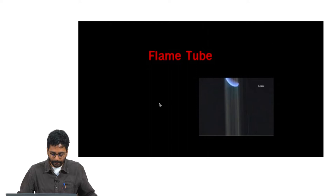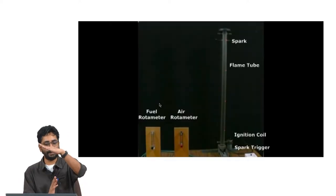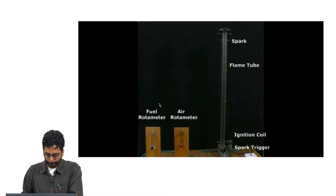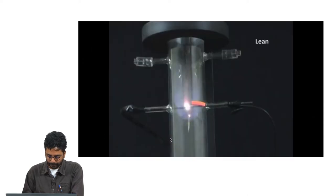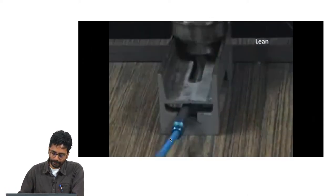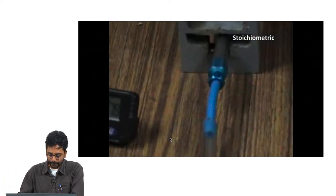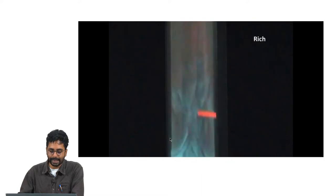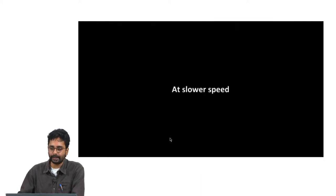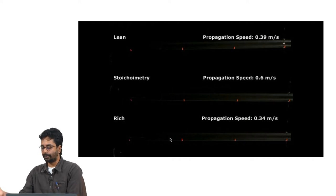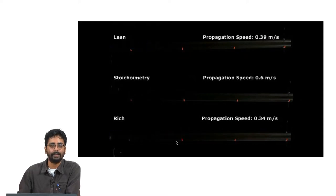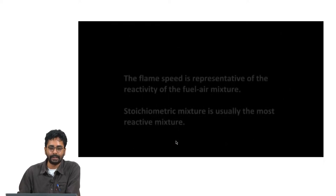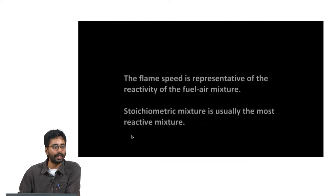This is the arrangement where the unburnt gases are stationary and a flame propagates through them. This is a tube in which the unburnt mixture is filled, ignited at the top, and you see a video of lean, close-to-stoichiometric, and rich mixture flames propagating. This will be shown in slow motion. There is also formation of boundary layer and other aspects which distort the flame. This is for LPG.